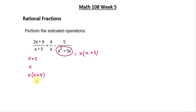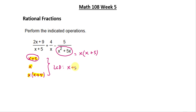Now we look for common factors across all denominators. We have x plus 5 from the first and the factored last term, and x appears in both the second and the last term. Since x plus 5 appears in both, we use it once, and since the two x's are the same we take just one. So the LCD is x times x plus 5, which contains all the factors of all three fractions.